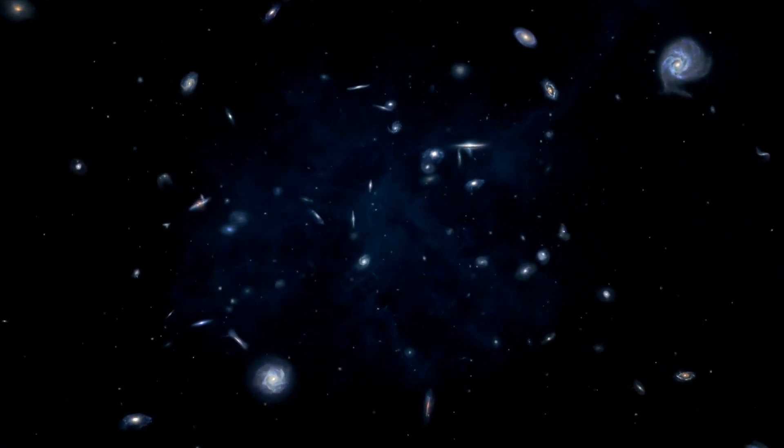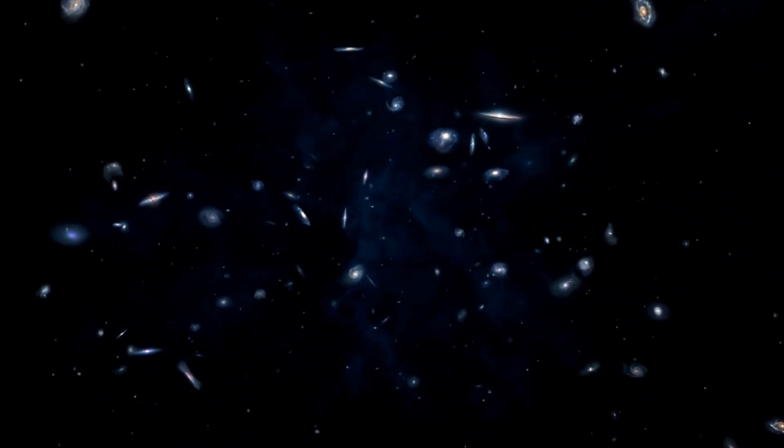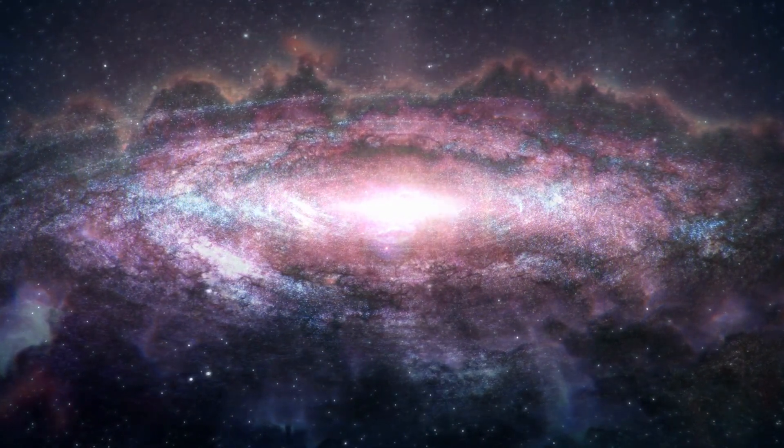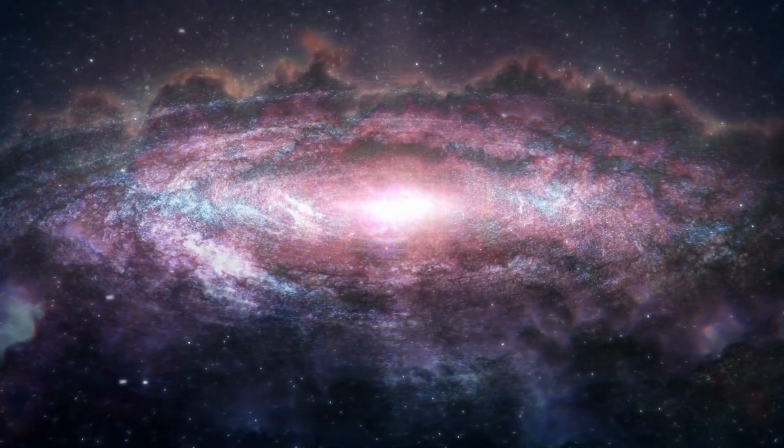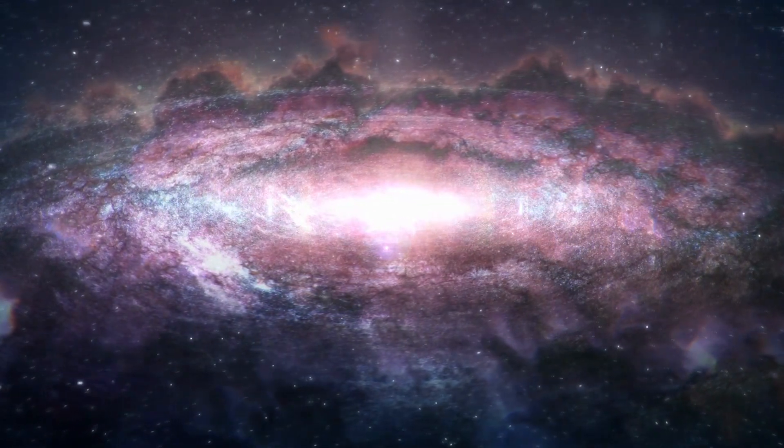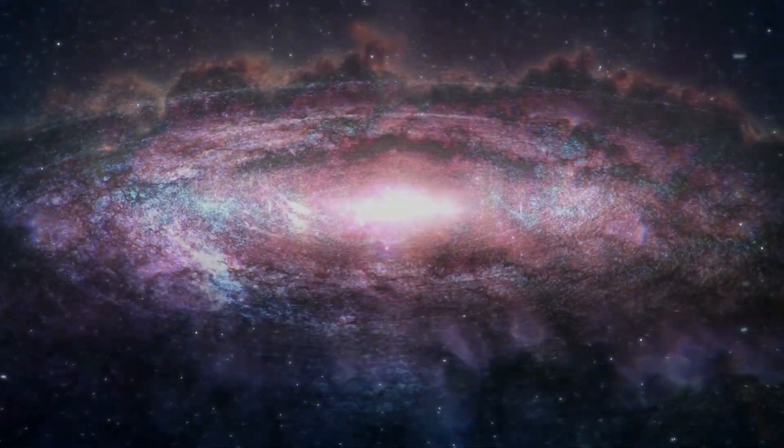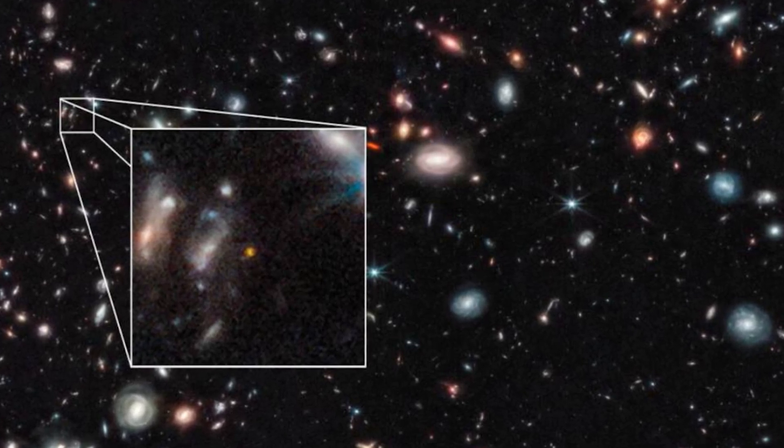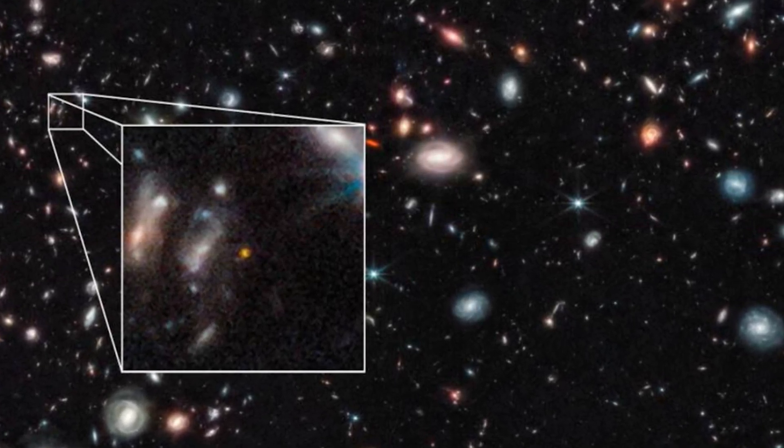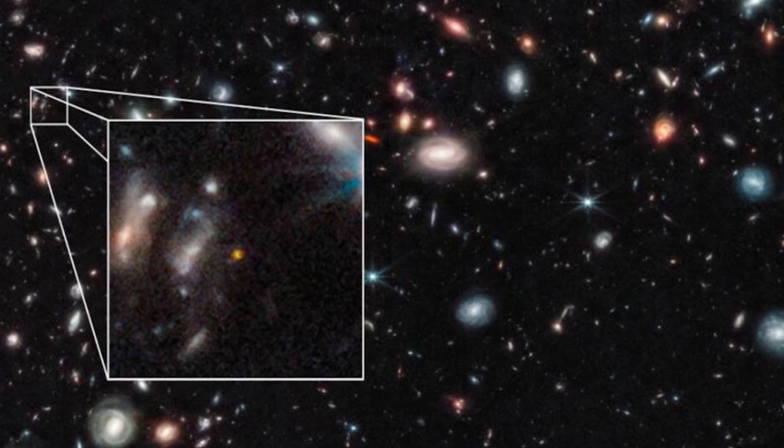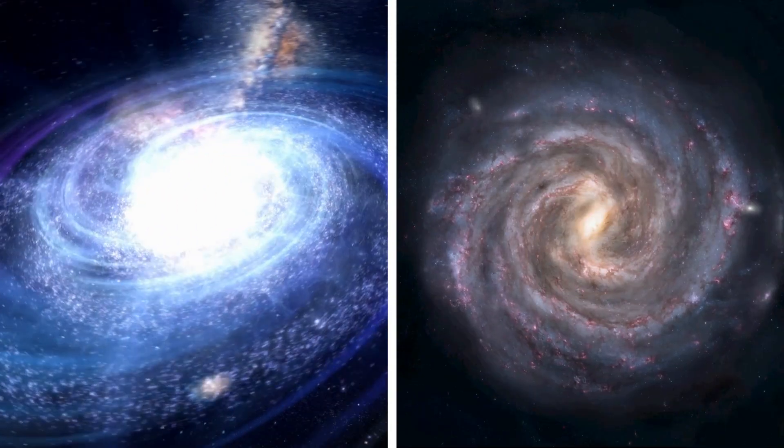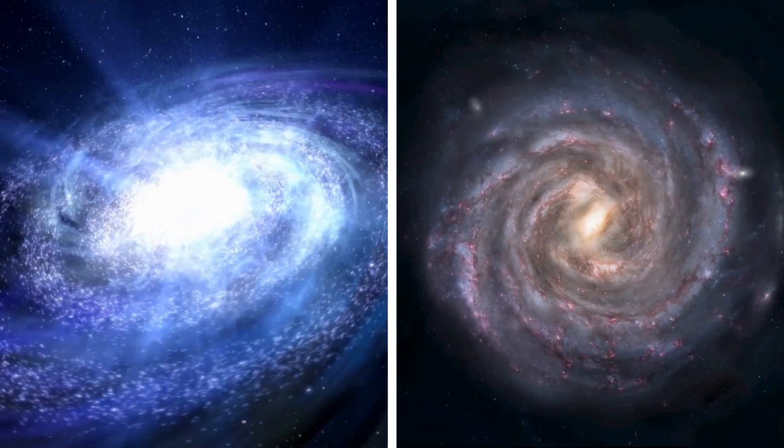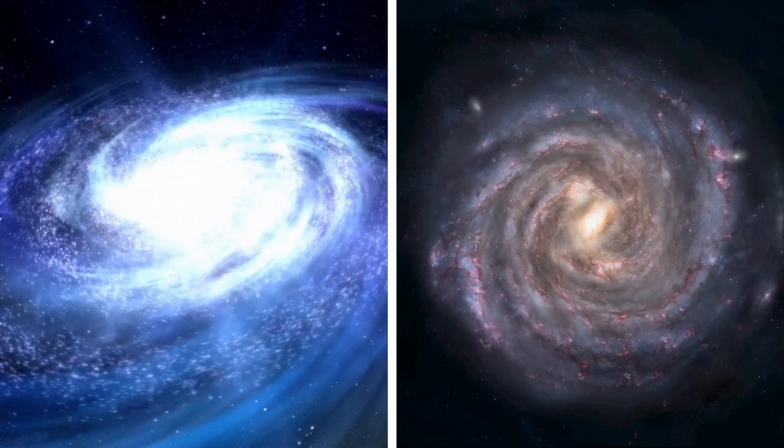Moreover, the smoothness of these galaxies is totally unexpected. According to the Big Bang theory, galaxies should show irregularities and variations in their structures due to the dynamics of their formation and evolution. However, the images reveal unusually smooth galaxies without the level of complexity and roughness that one would normally expect to see in galaxies of their age. This defies the expected time sequence for the formation and evolution of galaxies within the framework of the Big Bang theory.